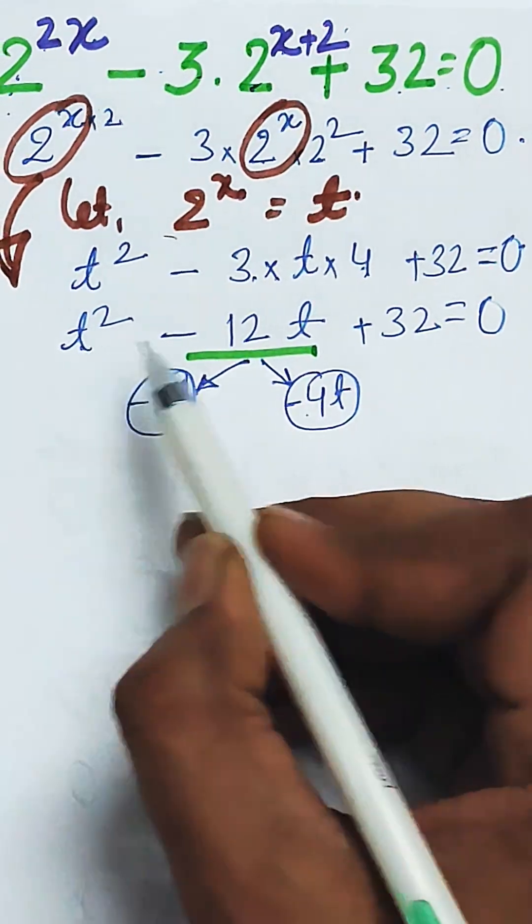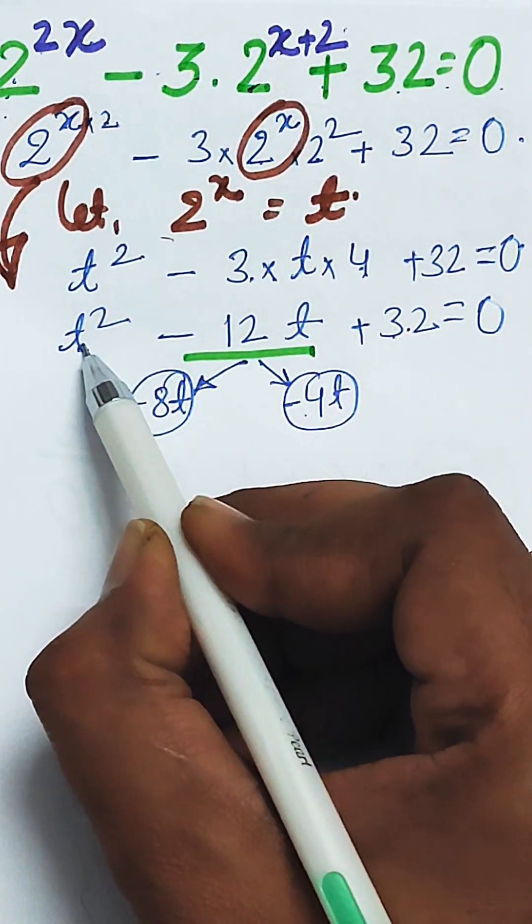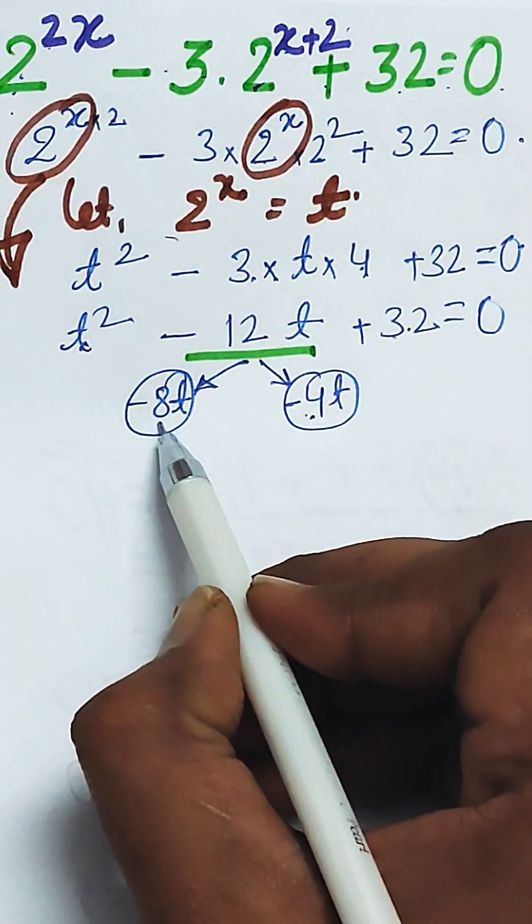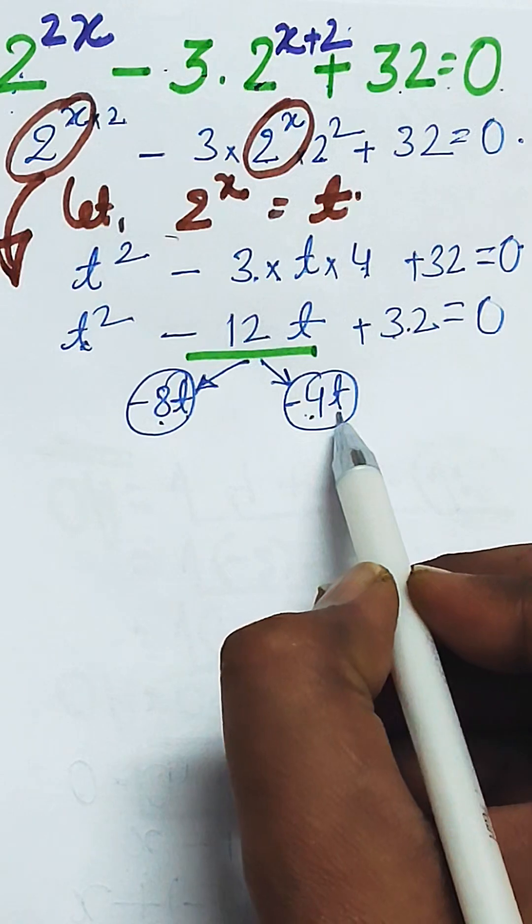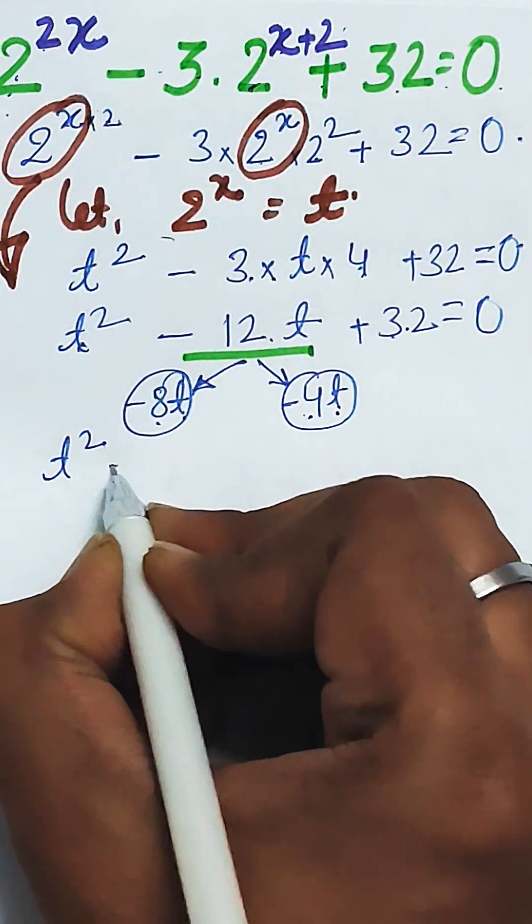you will get the product of the first and last. You can see 32 into t square will be equal to 32t square, and minus 4t into minus 8t will be equal to 32t square. So the middle term will be split into this way.